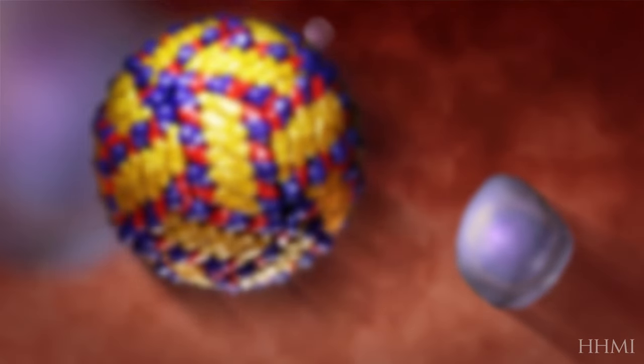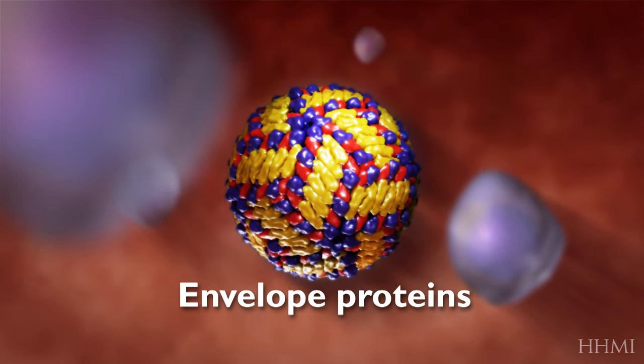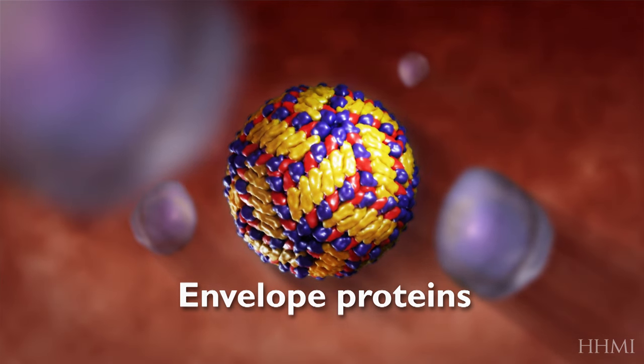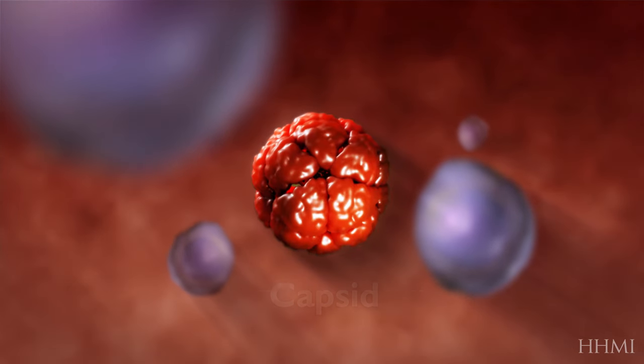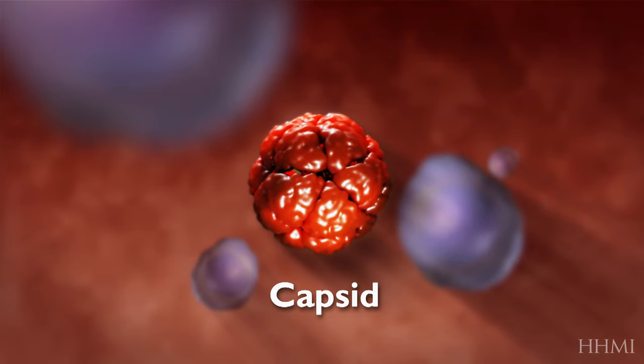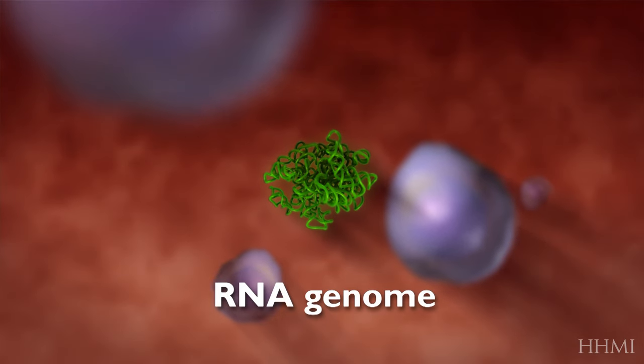Dengue virus is an RNA virus. Its outer surface is covered with envelope proteins, surrounding a lipid bilayer envelope. Inside the envelope is a capsid shell that contains the virus's RNA genome.